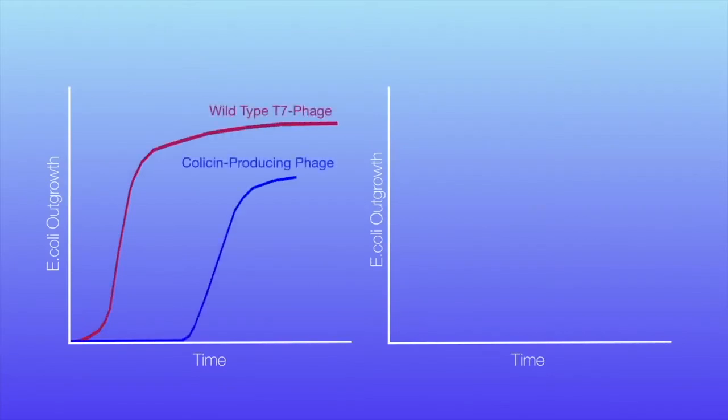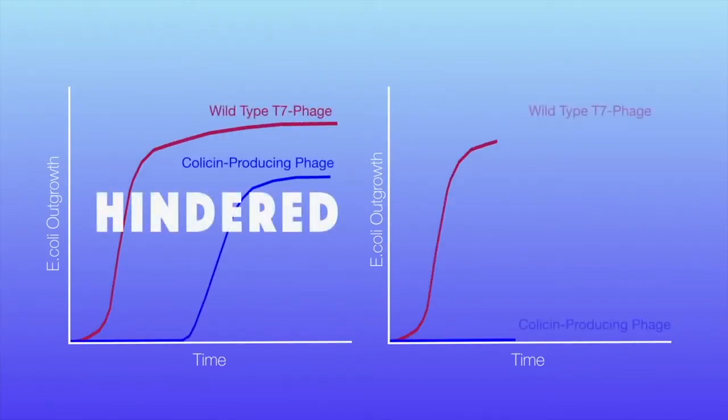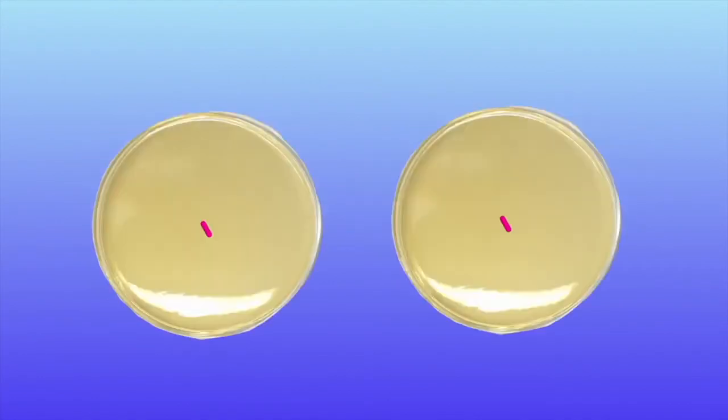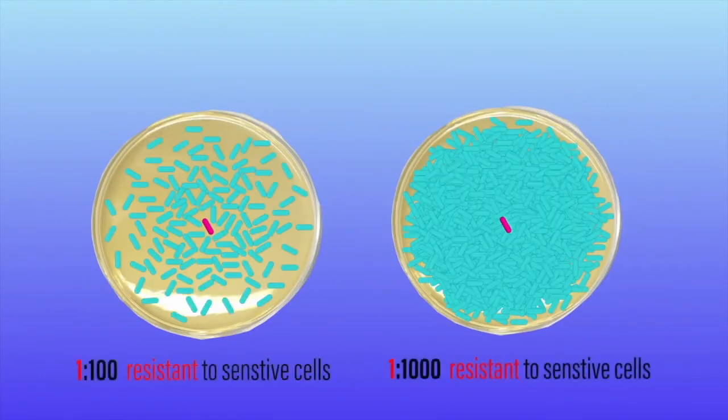and what we saw was resistance was, at the very least, hindered, but in some cases, completely inhibited, regardless of Collicin type or ratio of resistant to sensitive cells.